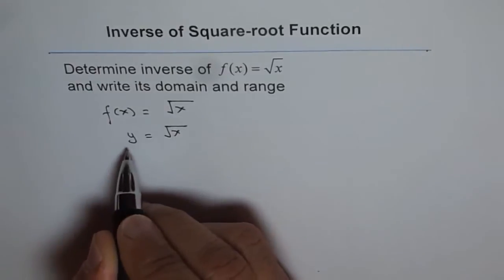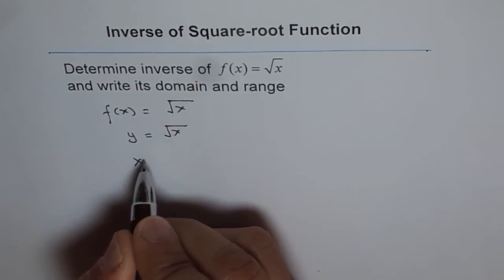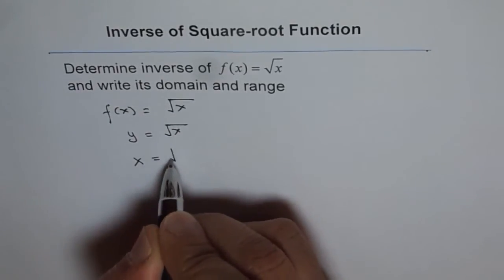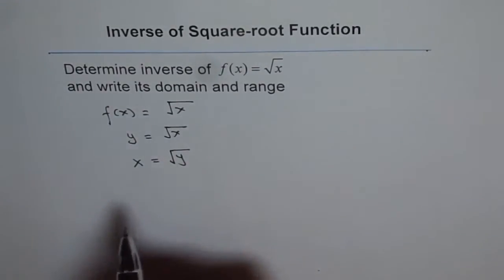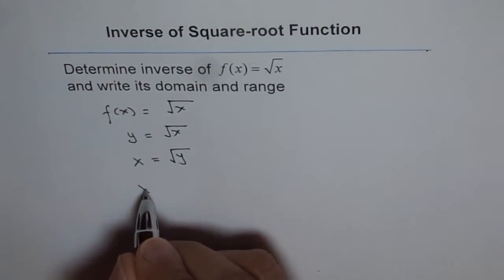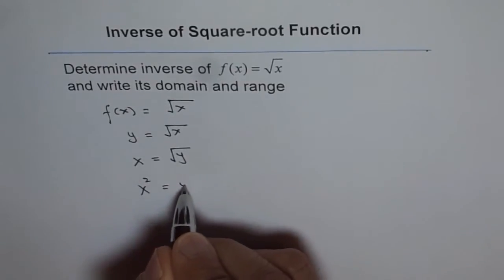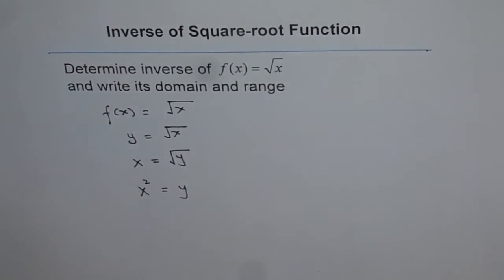Next is to interchange and we write x for y and y for x. Simple as that. Now we need to isolate y. So we'll square both sides and we say x square equals y.